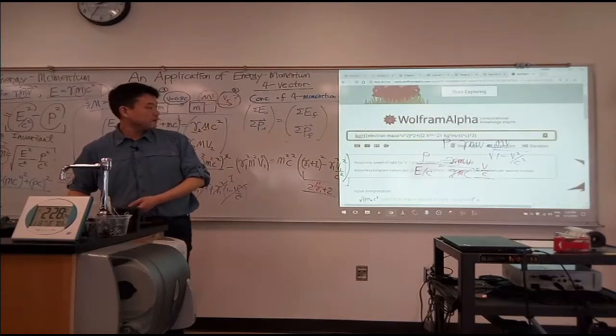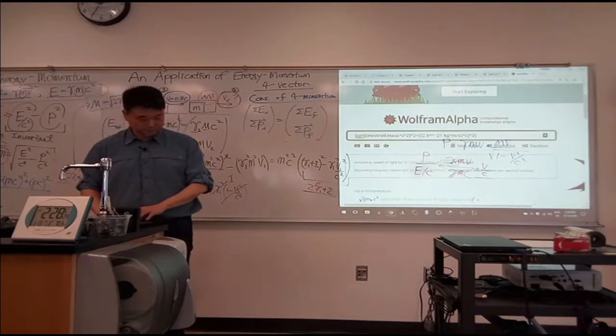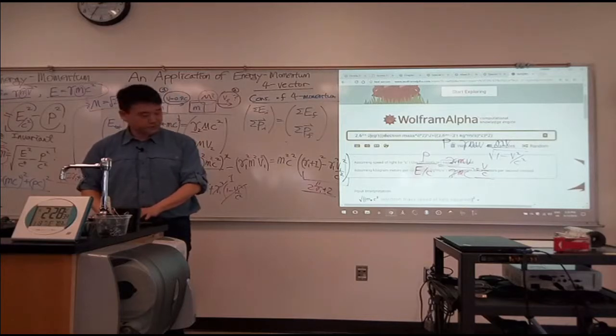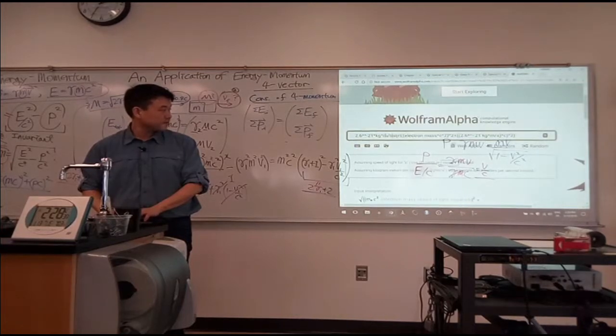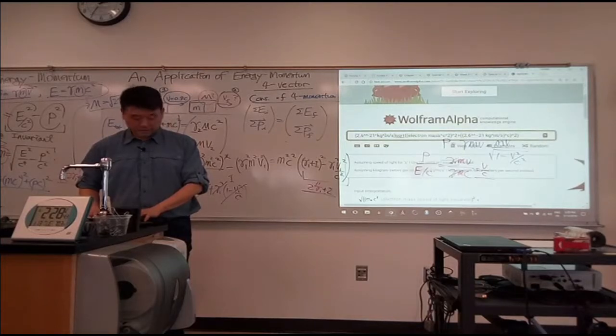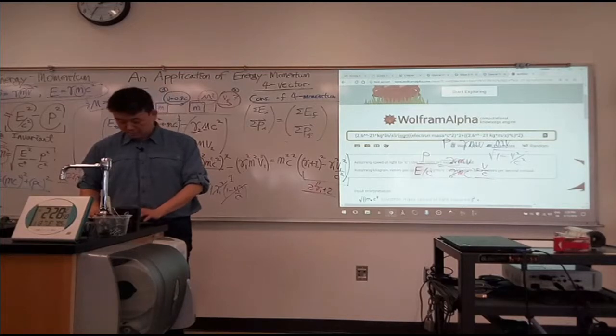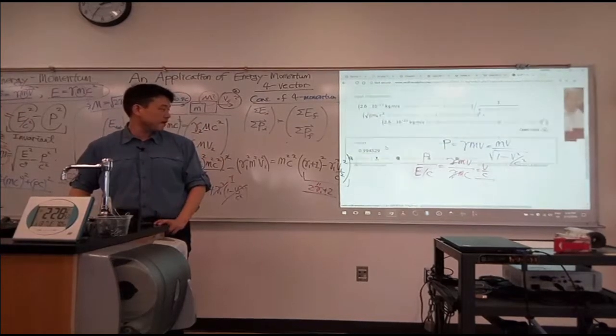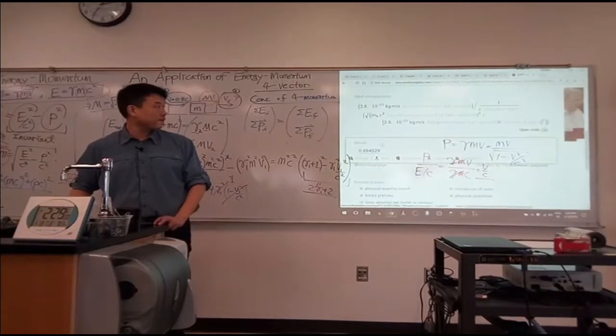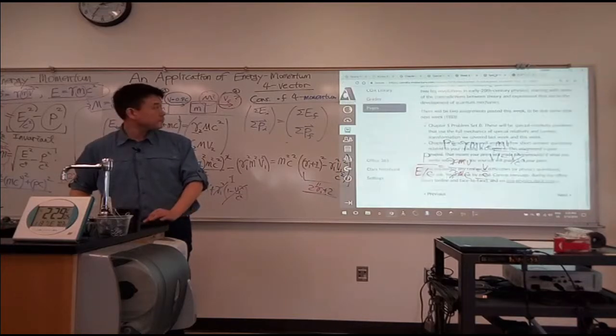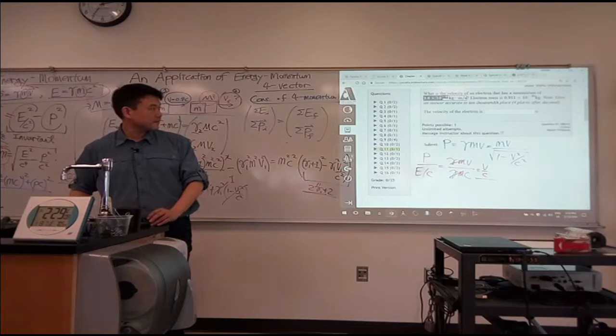So from what I have there, I take the momentum divided by that energy over c. 2.6 times 10 to minus 21 kilogram meter per second divided by energy, it gets divided again by c. That'll give me a number as a fraction of speed of light. So it gives me the fraction of speed of light, 0.9945 whatever. Oh wait, is that what it was asking? Oh yeah, it was asking in terms of fraction of speed of light.